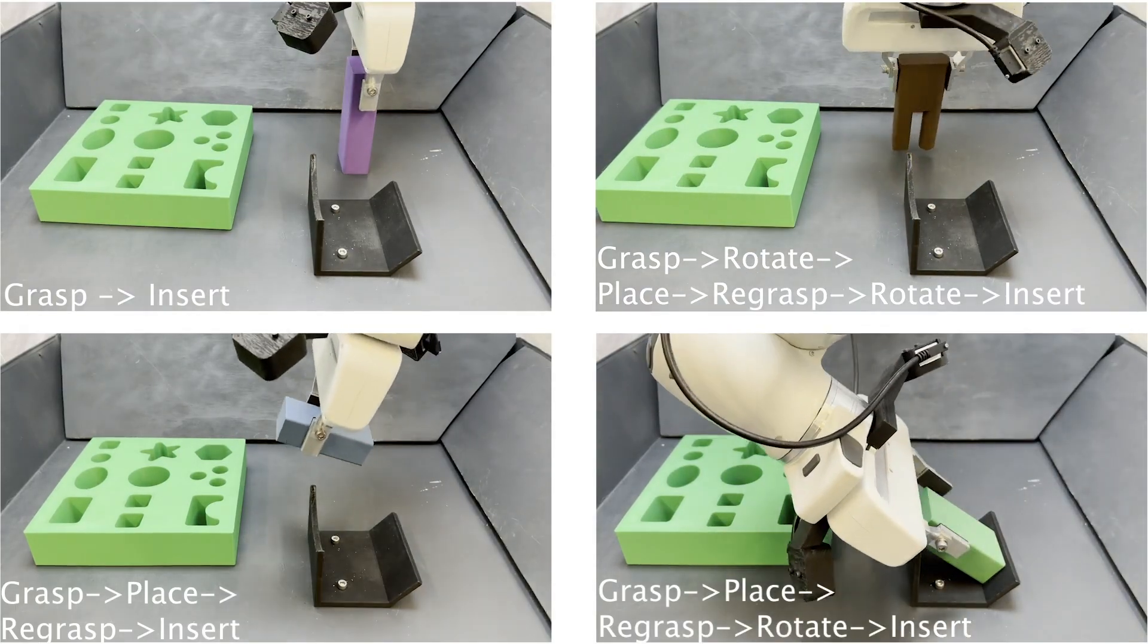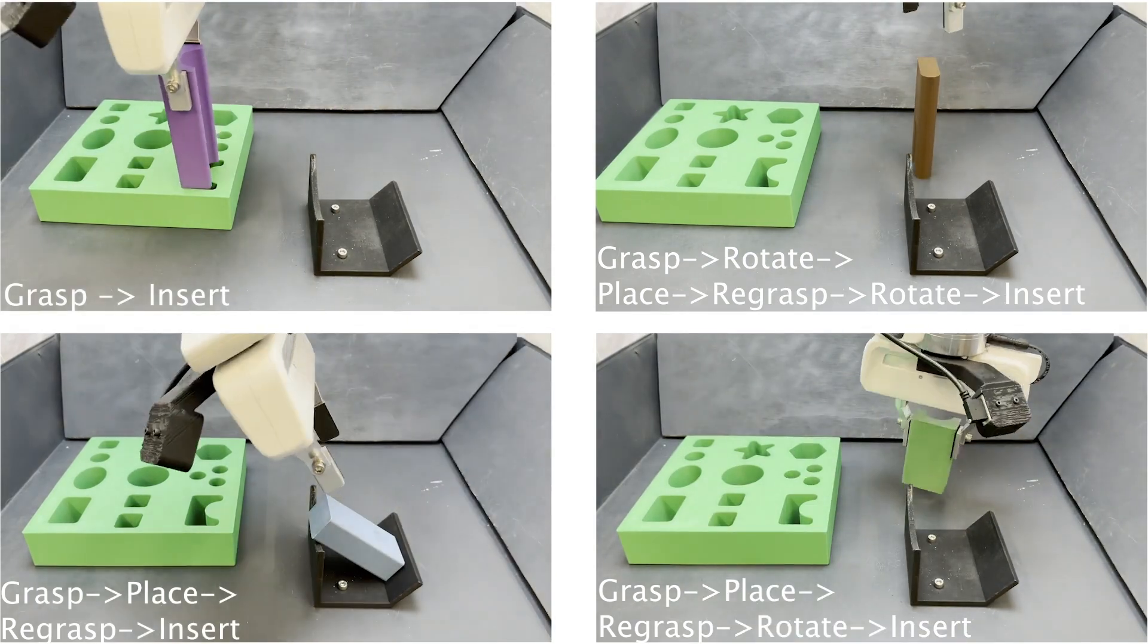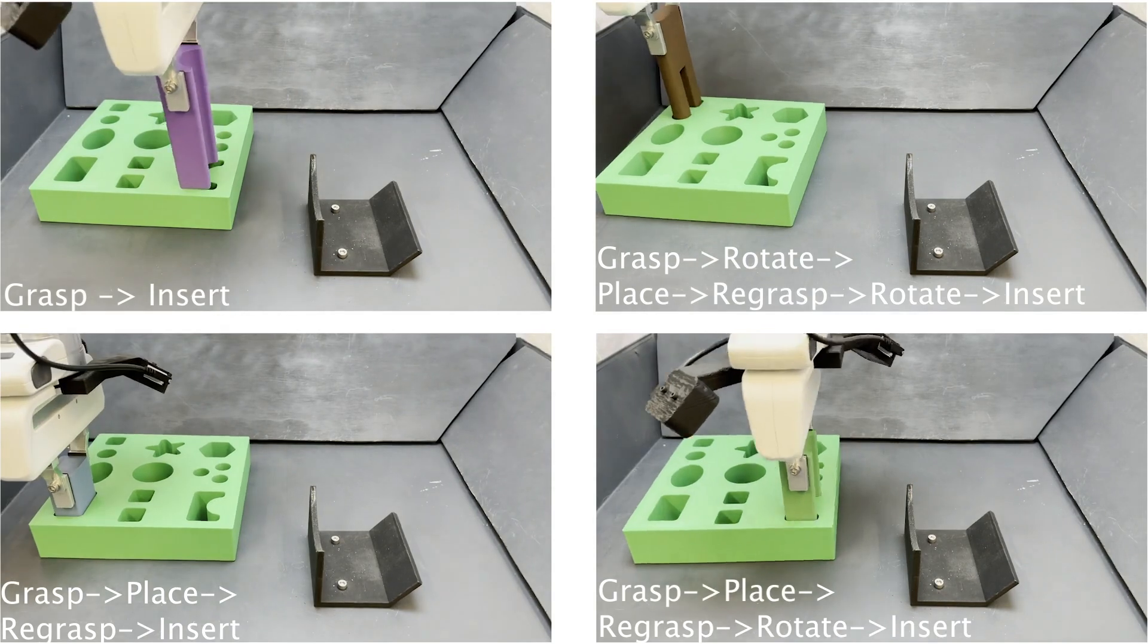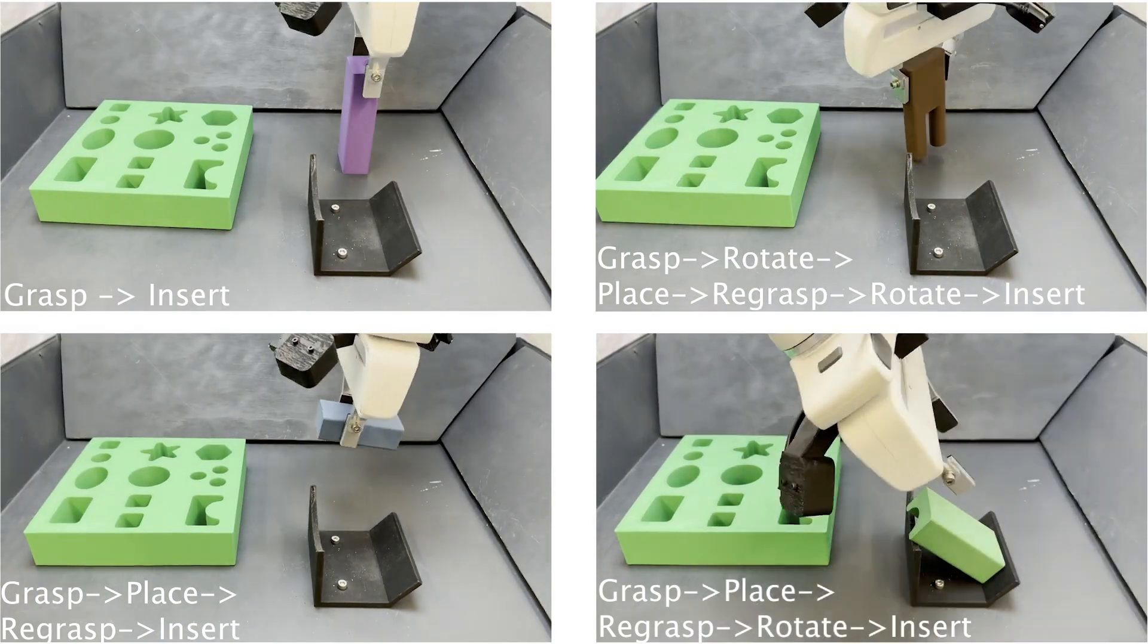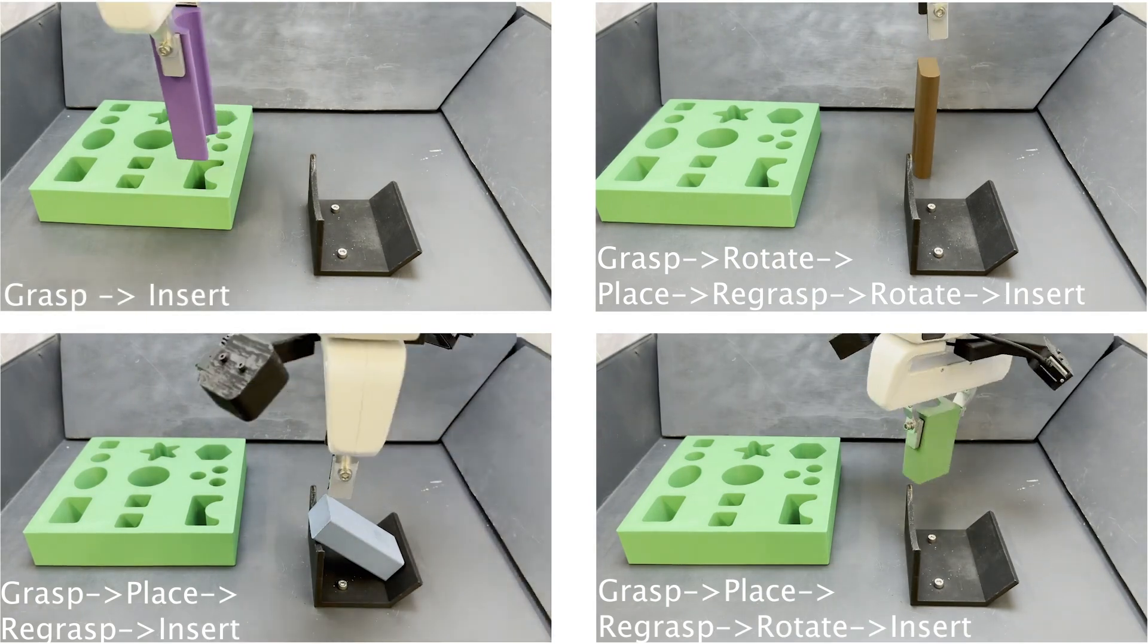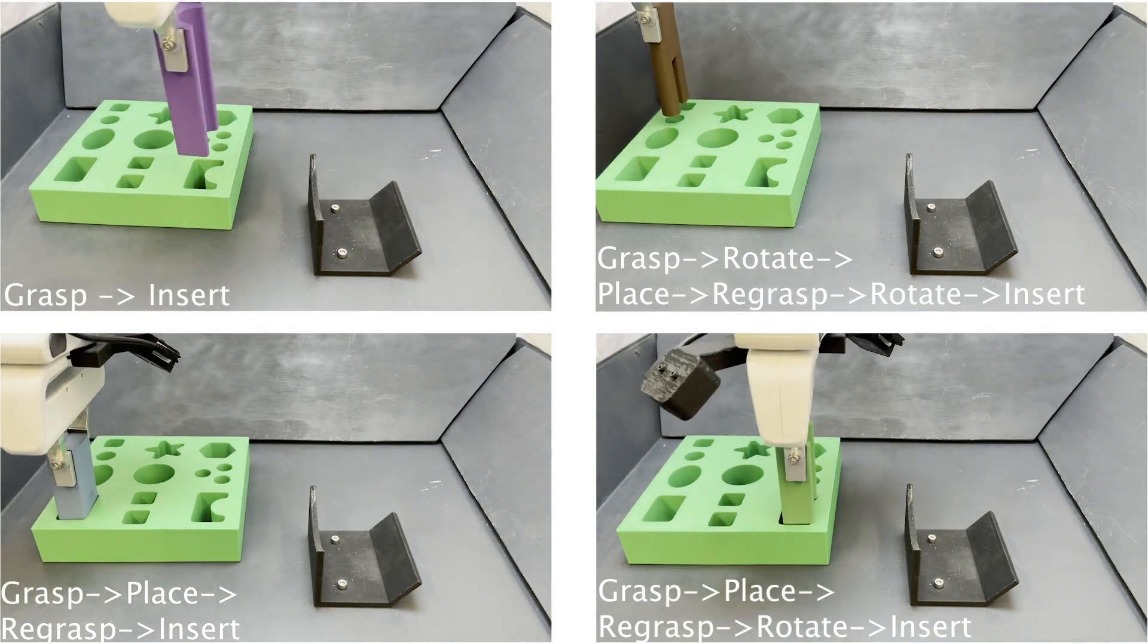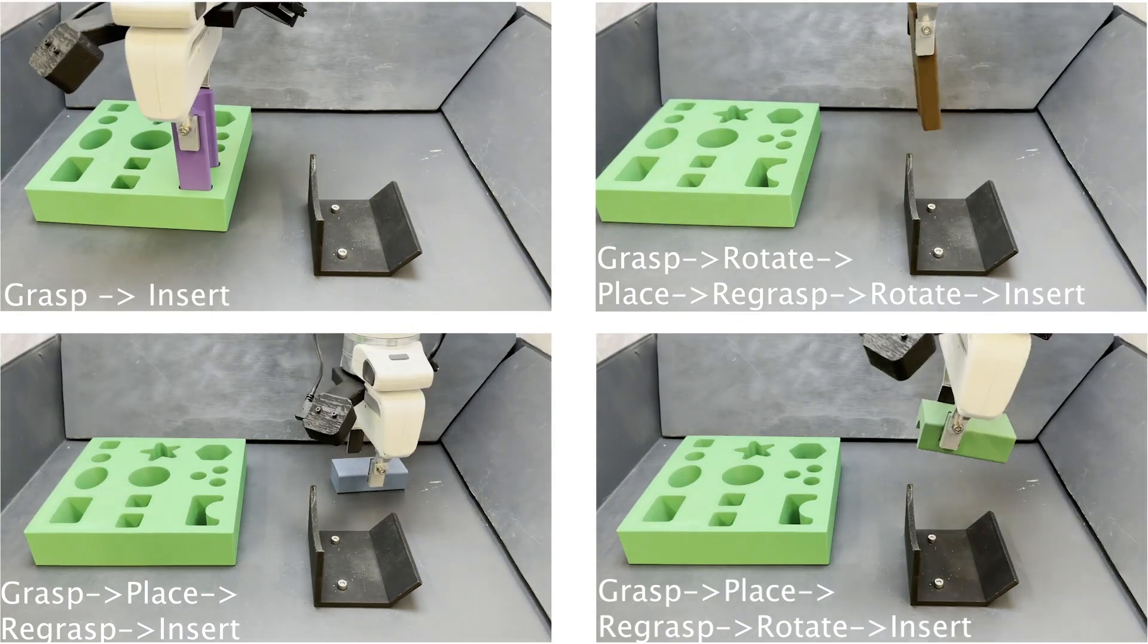Our benchmark can be divided into two parts. The first of which is a single object manipulation task, where a single assembly object starts lying in the workspace in a randomized pose. The robot needs to grasp the object, perform a series of reorientation steps, and precisely insert it into the board.